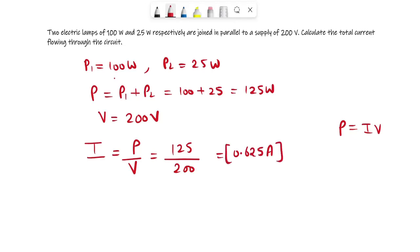So the current flowing through this circuit is 0.625 ampere. It is important to know that if they are in parallel, the power is added - P1 plus P2. So the total power it carries is 125 watt, then you can find the current flowing through the circuit. So yes, this is the answer for the first one. Now moving to the next one.